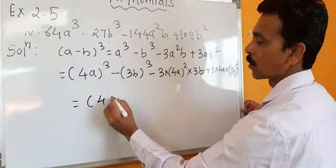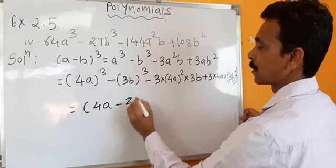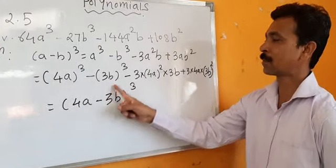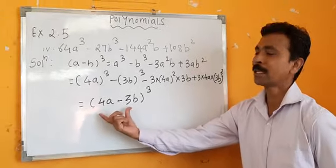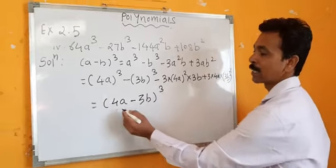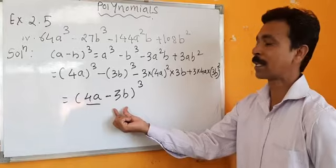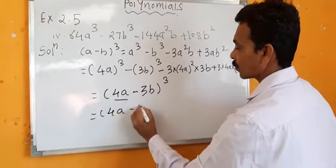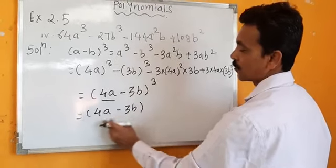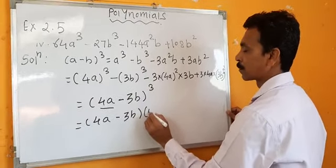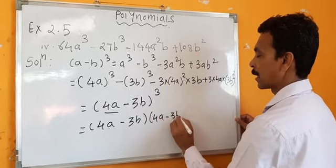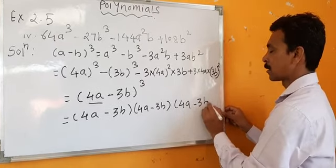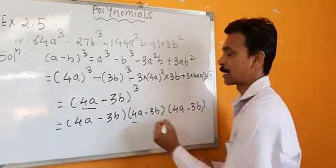So it equals (4a - 3b) whole cube. Because this matches the identity A minus B whole cube where A is 4a and B is 3b. As the question is to factorize, we write (4a - 3b) three times: (4a - 3b) into (4a - 3b) into (4a - 3b). So this is the end of the sum.